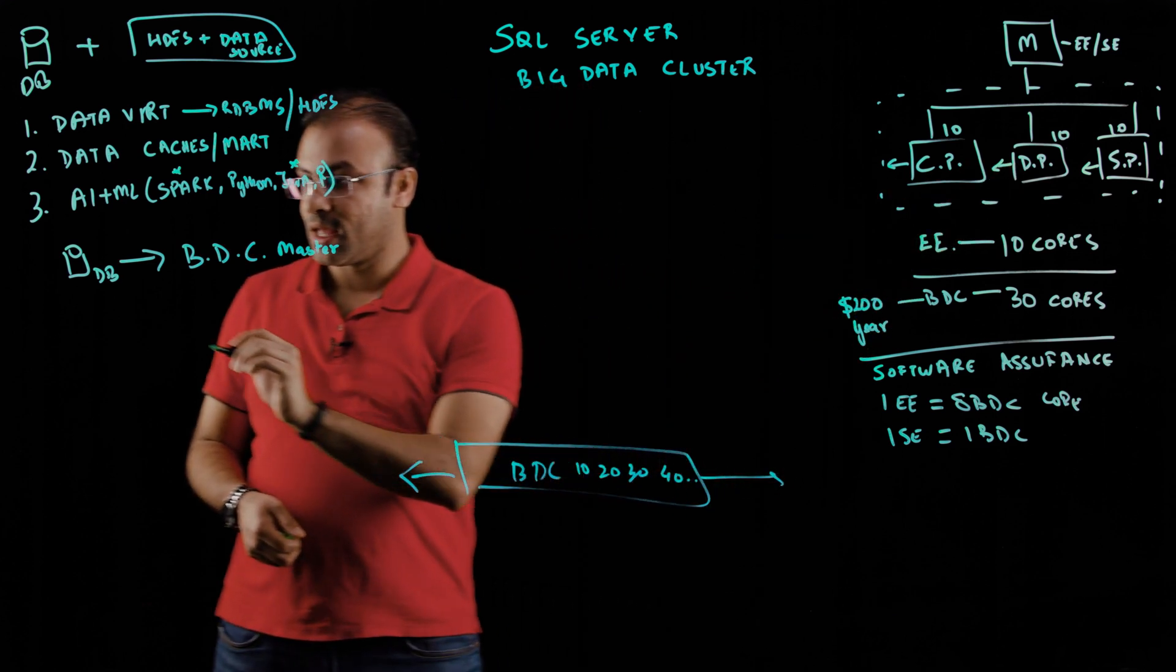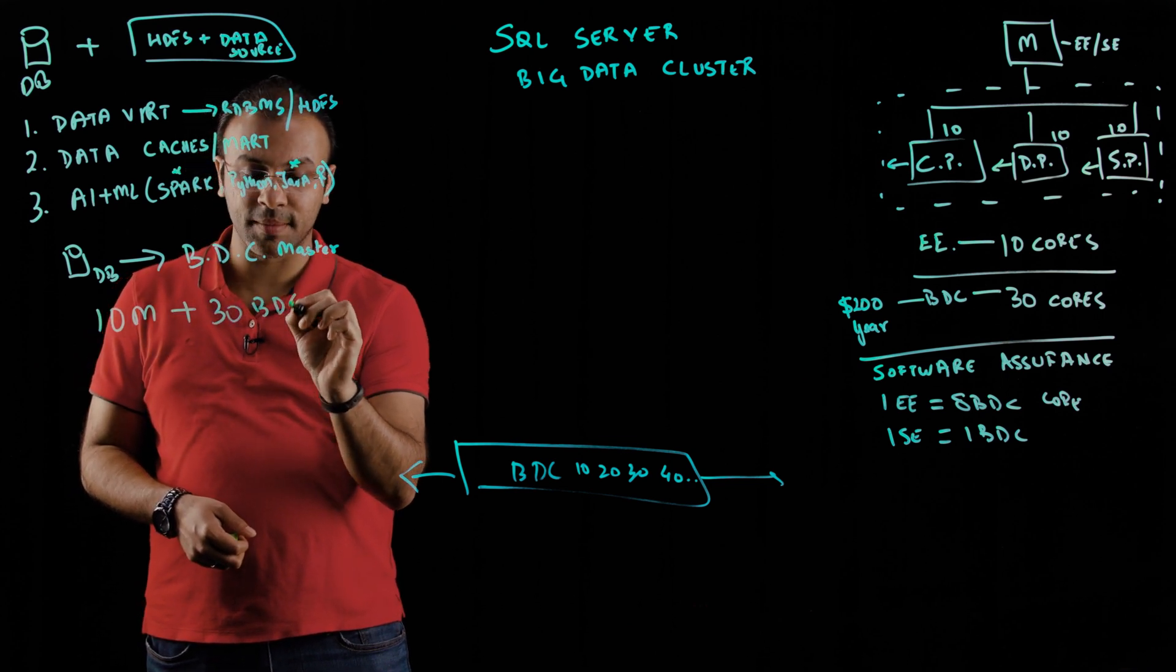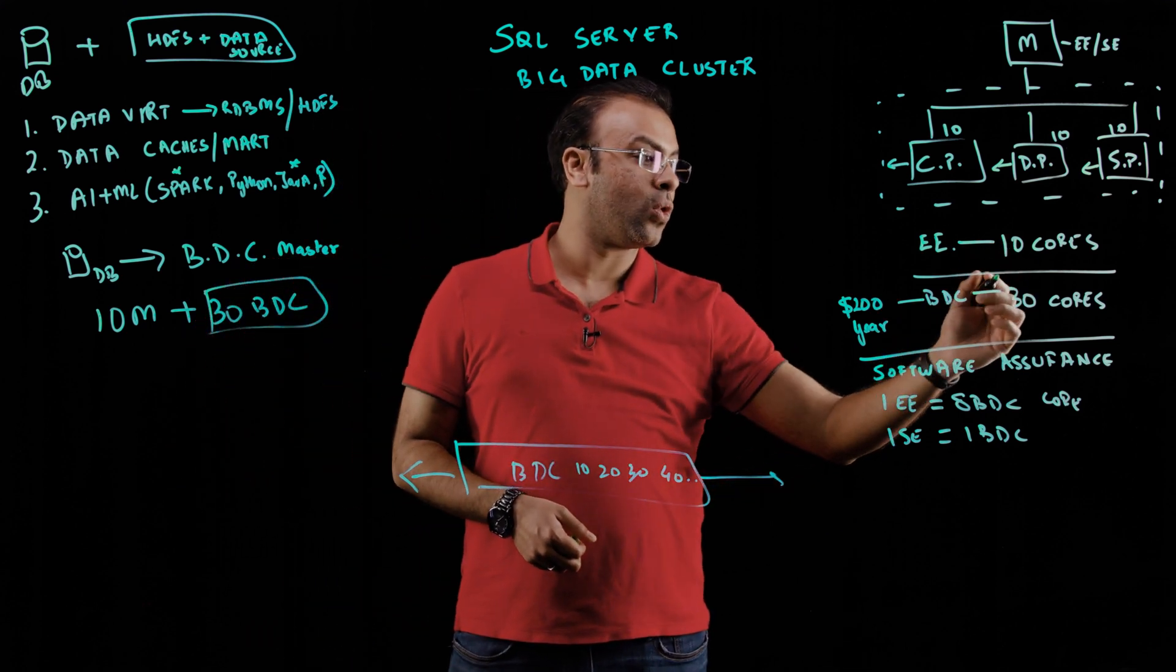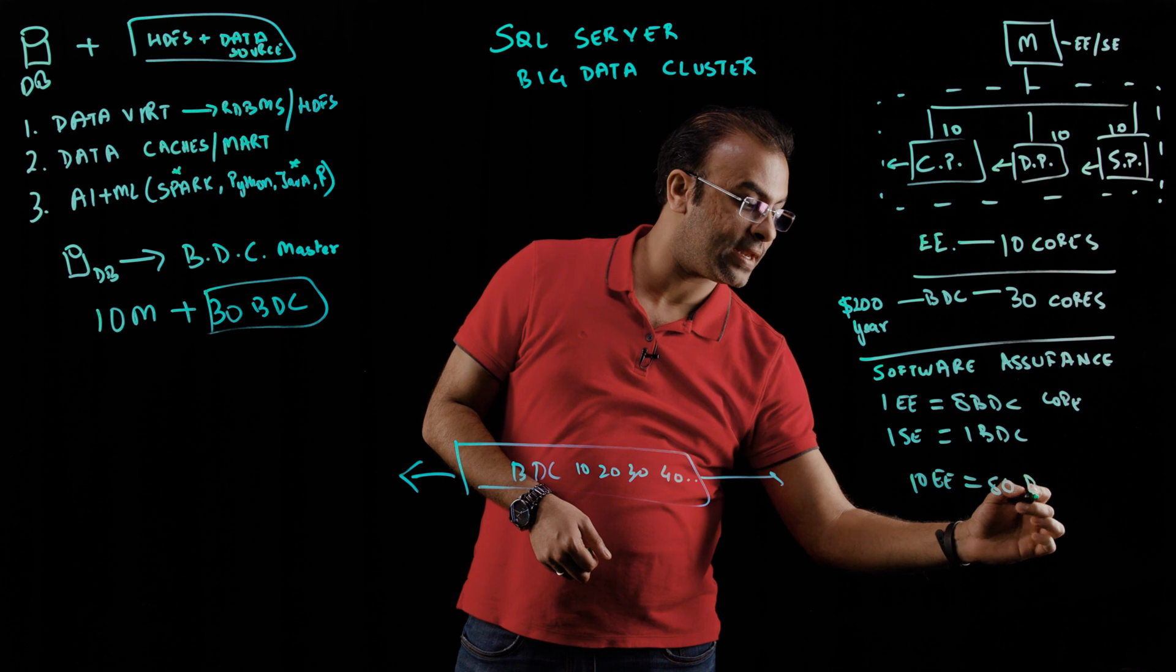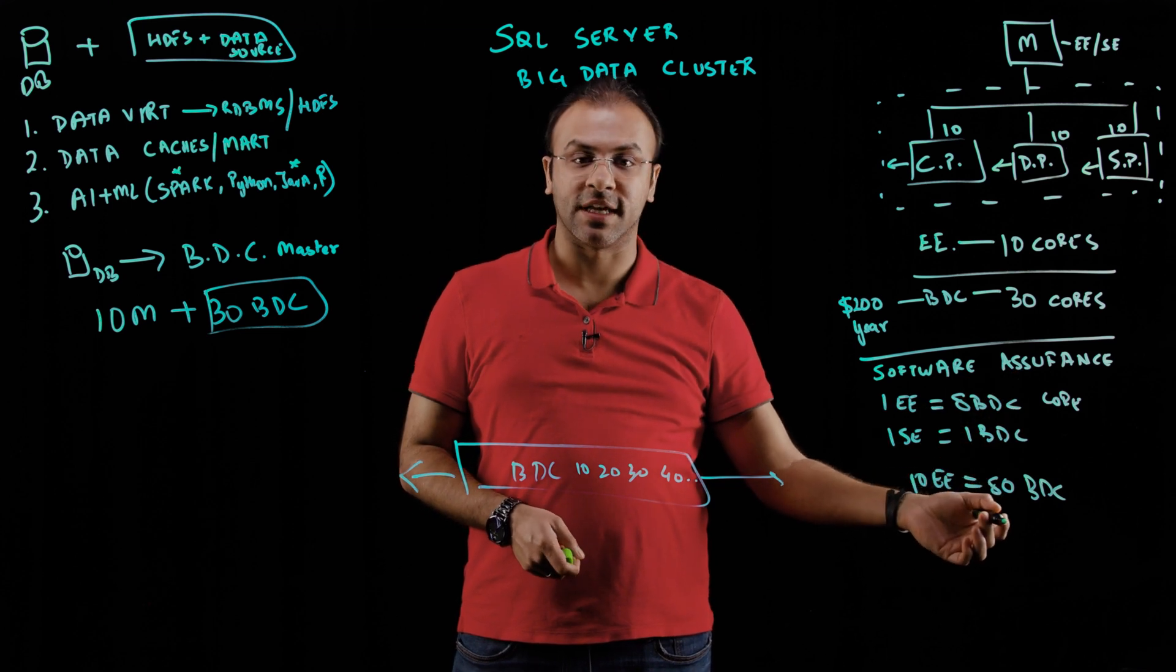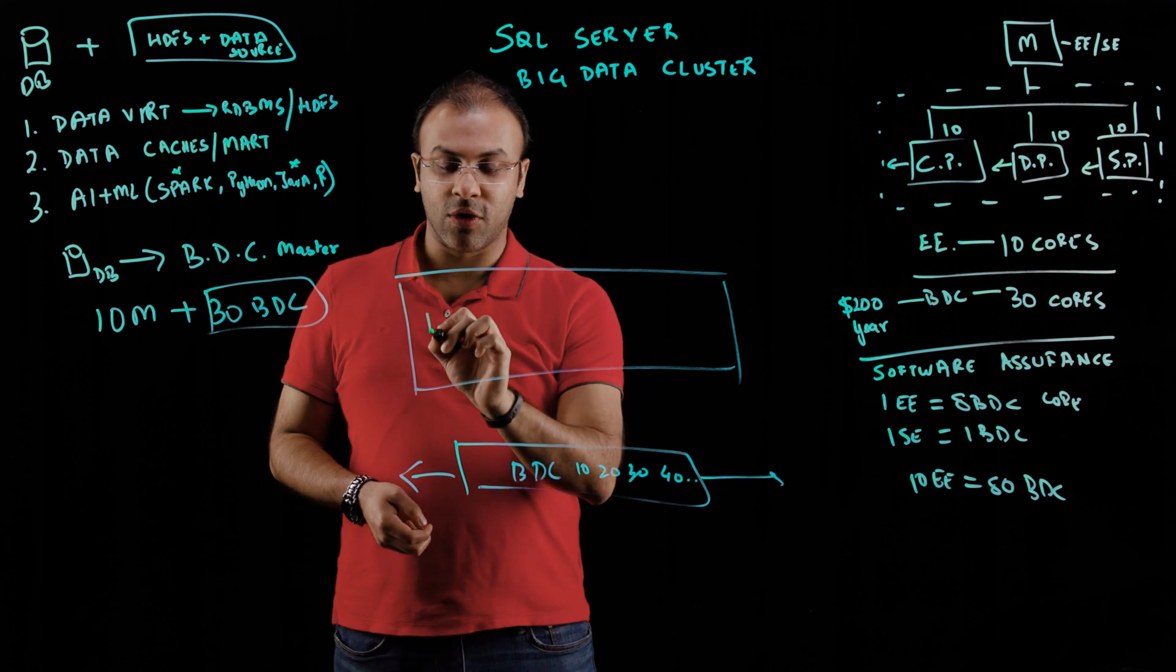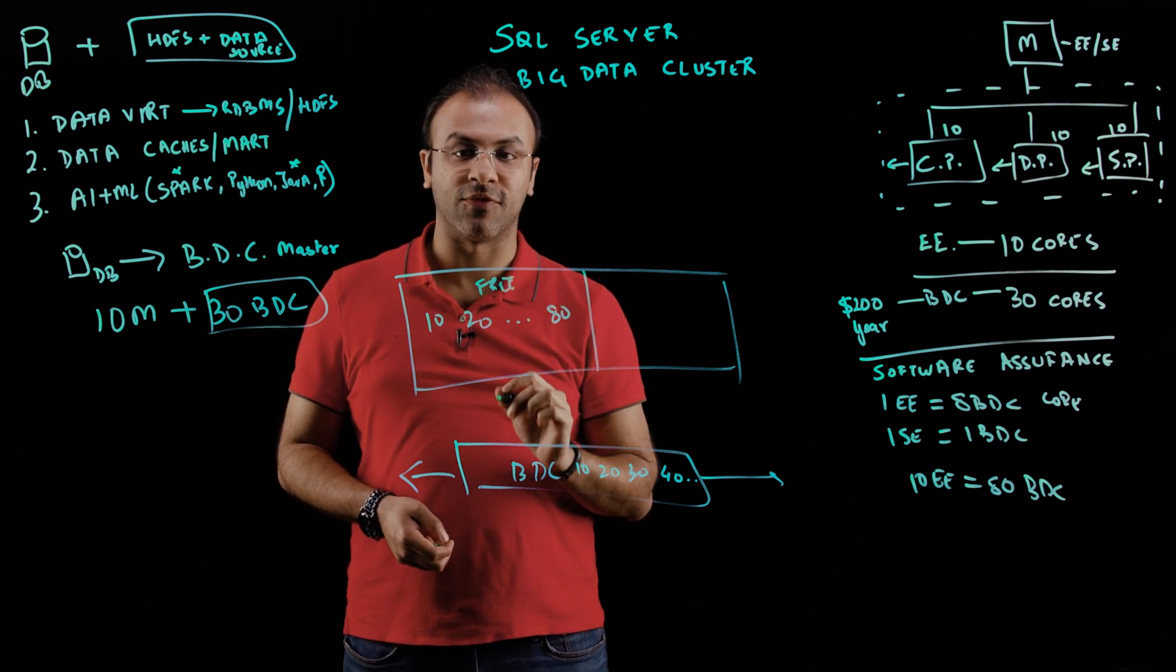So if I took this scenario and let's say I started with 10 cores in my master and 30 cores in my BDC, and I have software assurance, I am essentially not running this with any cost. This is actually an entitlement, because these 10 cores now give me 80 cores of big data for free. So till I exceed 80 cores, I don't need to actually license. In a POC kind of scenario, you would go from 10, 20 until you reach 80, there is no cost. You're running this for absolutely free, even in production.